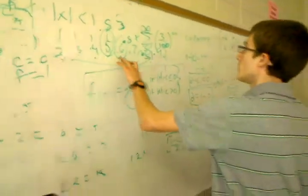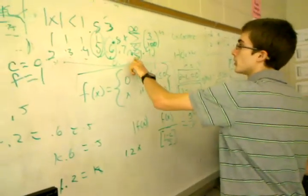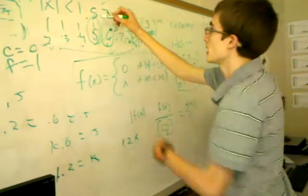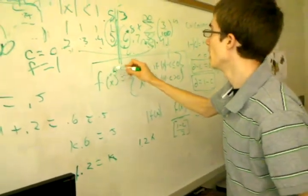Hold on. 1, 2, 3, 4, 5, 6, 7, 8. 1, 2, 3, 4. Okay, it's going to be 0.5. It's going to be 0.55. It should be the mid value.